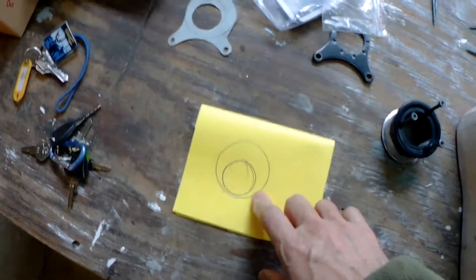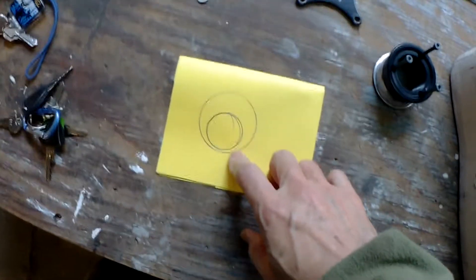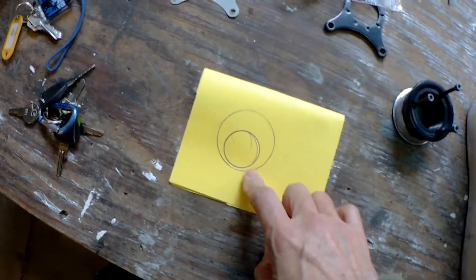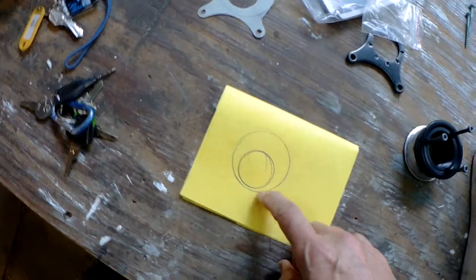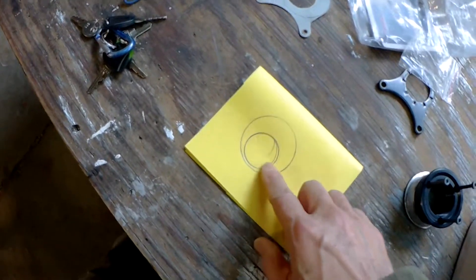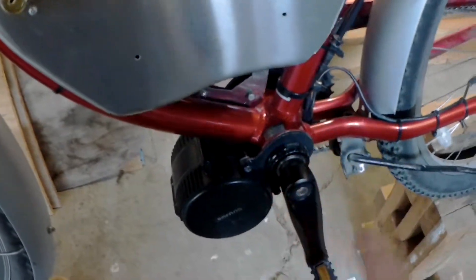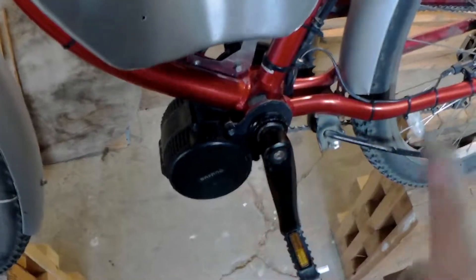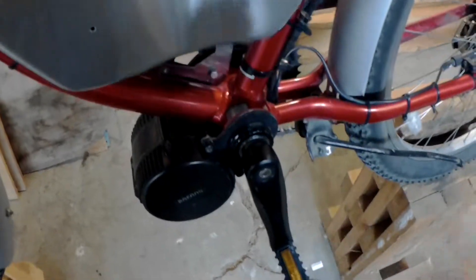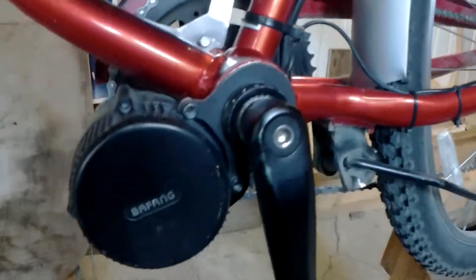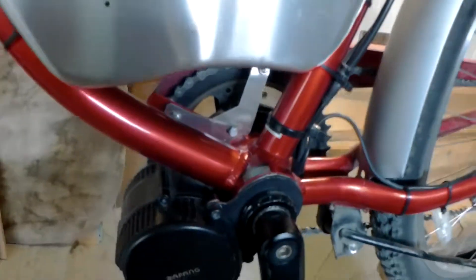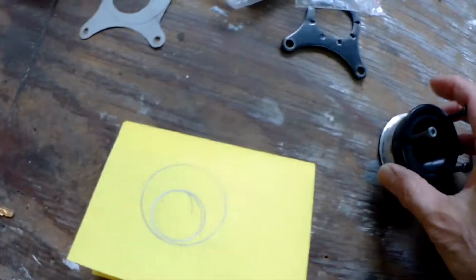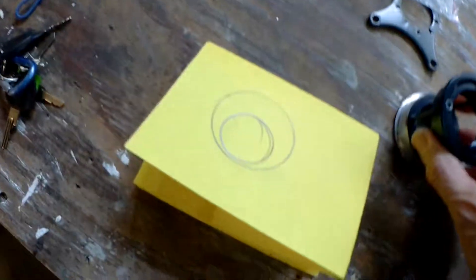Or if you have access to a machine shop you can machine it out of aluminum, steel, hard plastic, or if you get desperate I suppose you can line the inside of the bracket with some sort of tape or something and then fill it up with epoxy putty. But in my case I created it out of wood.